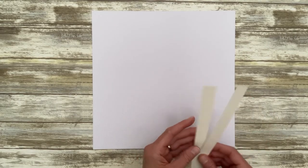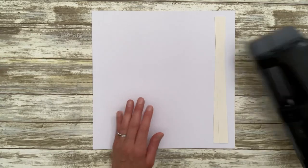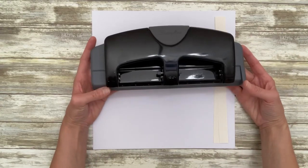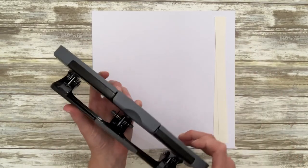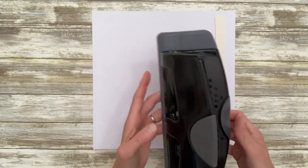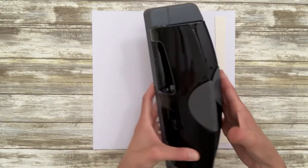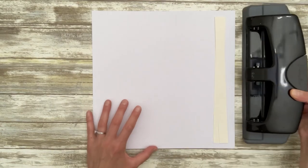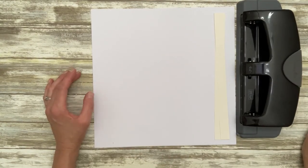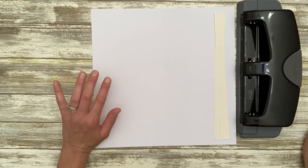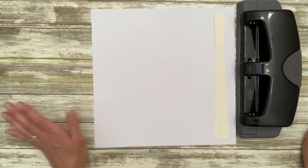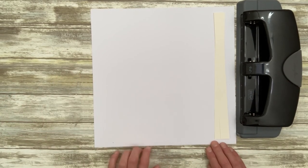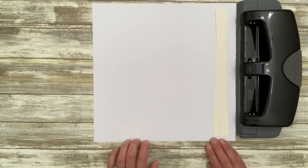You also need a three-hole punch in order to get your pages punched. And you are of course going to need a three-ring binder, but you will not be able to figure out what size you need until all of your pages are decorated. So that is going to be the last step of this album.